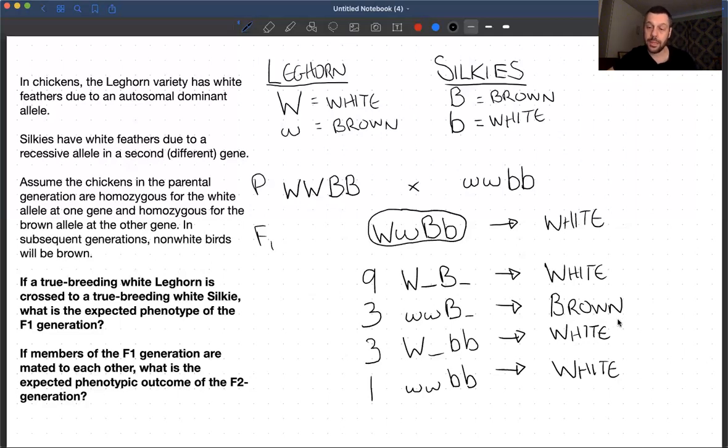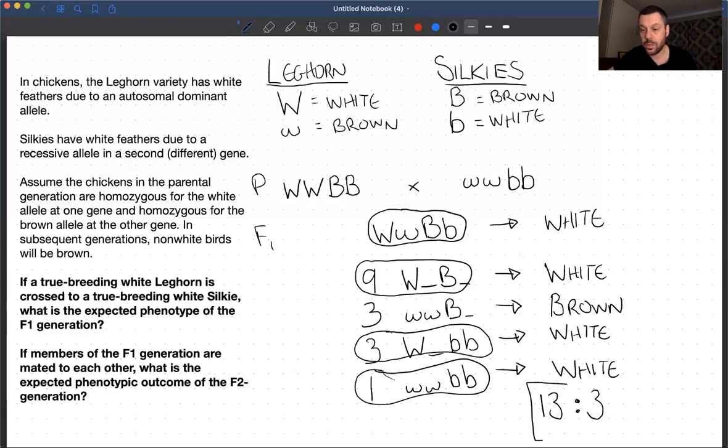Now, if you look at what that means from a phenotypic ratio, what's going to look the same here? So these guys, these guys, and these guys are all white. And if we add together those phenotypic classes, we see it's nine plus three plus one, it's 13. It's going to be a ratio of 16. So it's 13 to three. The answer to this question is the phenotypic ratio will be 13 white to three brown. And that will be the answer.